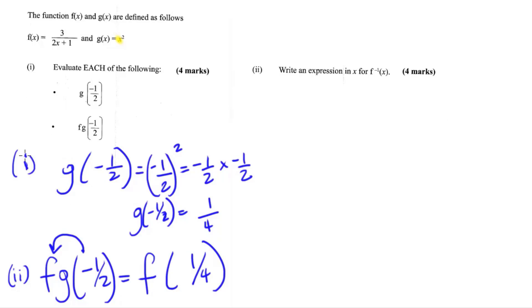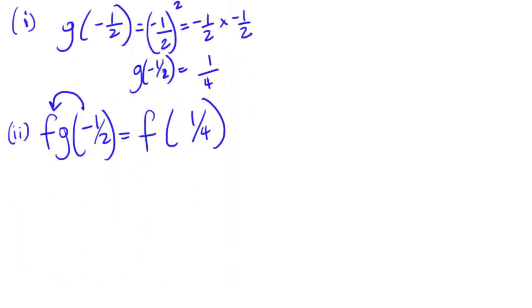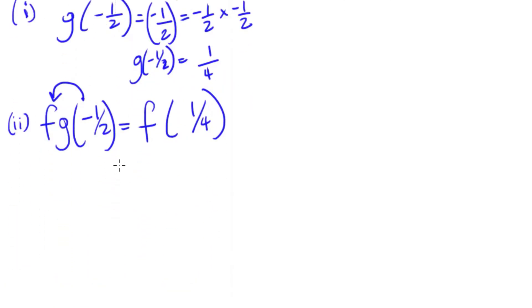So I can replace my g of negative 1 half, and what it's really saying is that I'm just putting a quarter into f because g of negative 1 half is a quarter. So all I need to do is put a quarter into f. So that means I'm going to put my quarter here where I see x. So now that means I'm going to rewrite this. Instead of 3 over 2x plus 1, this is going to be 3 over 2 times a quarter plus 1. 2 times a quarter, so that's going to be 3 over, 2 times 1 over 4, 2 into 2 is 1, 2 into 4 is 2. So that would be a half.